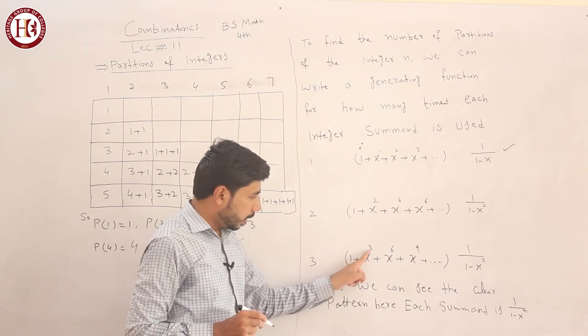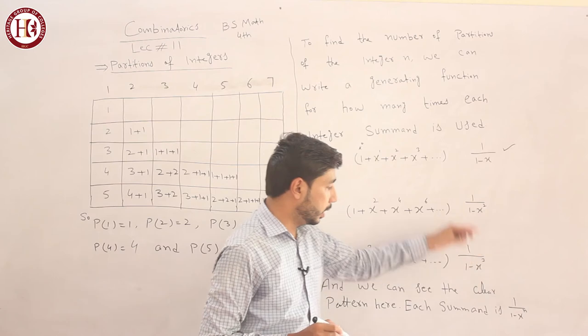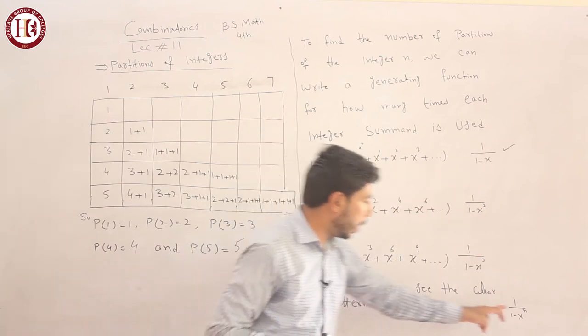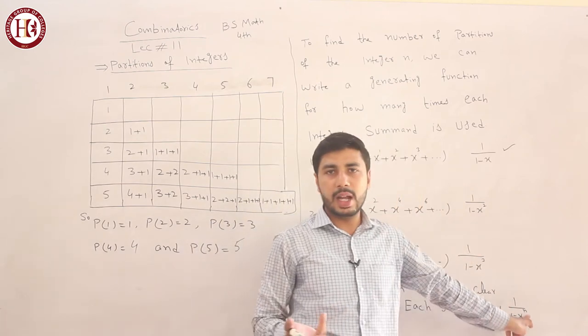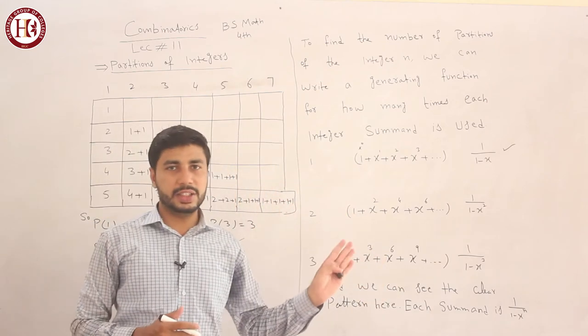Next, you have 3, so x^3, x^6. The power starts at 3. In this way, when we go up, what will the power be in the end? x to the power n. So this is how the partition of integers works.